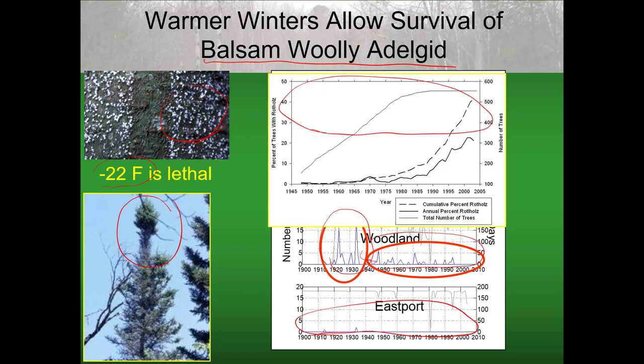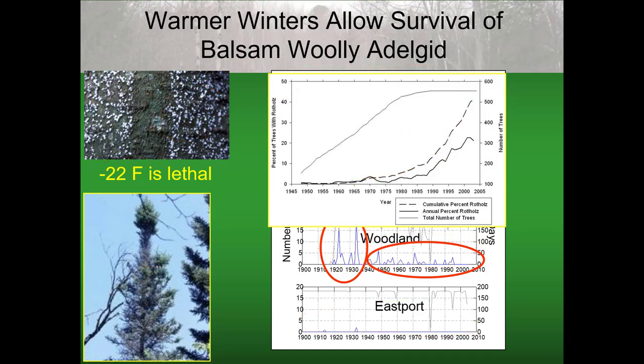In studies done by Alison Knote for her master's work, she did tree ring analysis, and we could actually see where — based on markings on the tree rings — the adelgid incidence has been increasing in the balsam fir in the more inland areas of the state ever since the 1940s. So warmer winters mean we now have more problems with the adelgid.